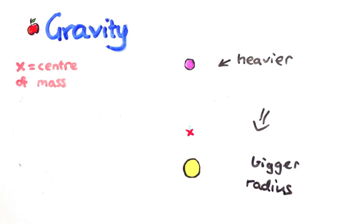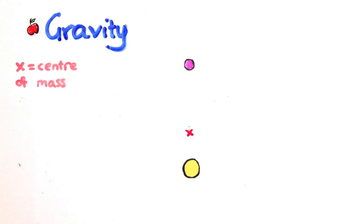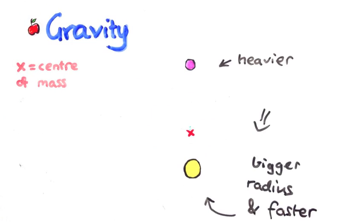Another way to think of this is the radius is bigger, but it still takes the same amount of time to complete an orbit, so the star must be going faster.